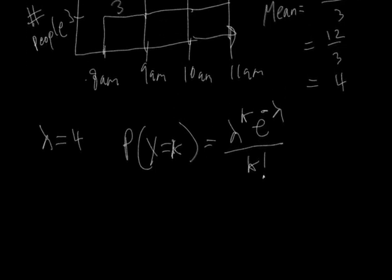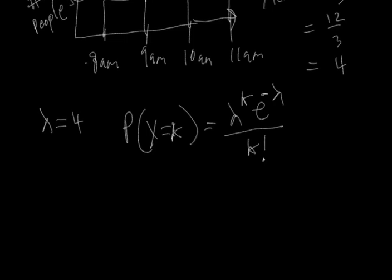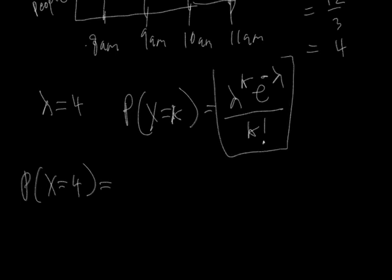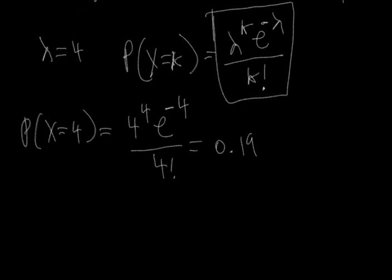Suppose we wanted to find the probability of seeing 4 individuals, given that the average is 4. That's equal to the probability of x equaling 4. Everywhere we see k we swap in 4, and everywhere we see lambda we swap in 4. So we have 4 raised to the 4, times e raised to the minus 4, all over 4 factorial, and this is equal to approximately 0.19.